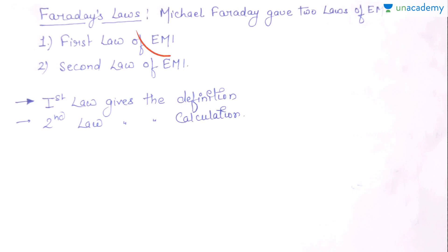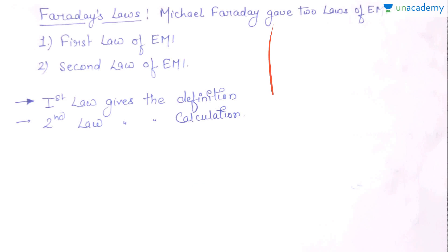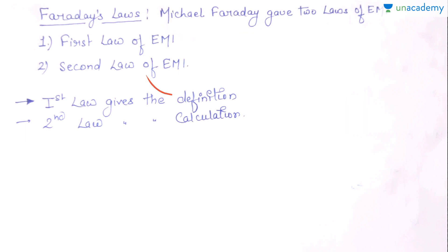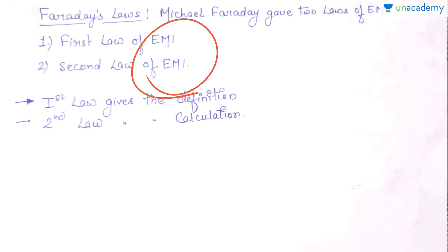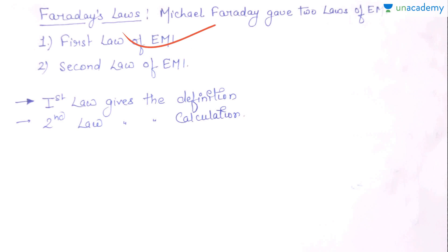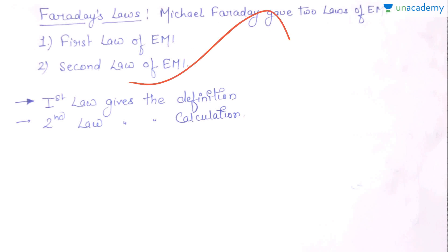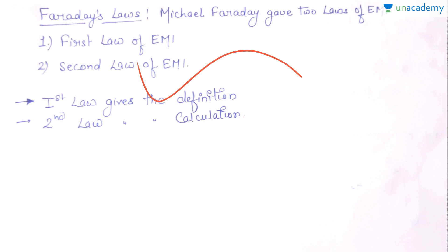So far we have dealt with the definition of Electromagnetic Induction, the idea of Electromagnetic Induction, how it comes into the picture, and how scientists performed several experiments to prove their facts and come up with these laws. One scientist who dealt with Electromagnetic Induction through various experiments came up with his own laws — his name is Michael Faraday. Faraday gave two laws of Electromagnetic Induction: the first law and the second law, generally known as Faraday's first and second laws of Electromagnetic Induction.